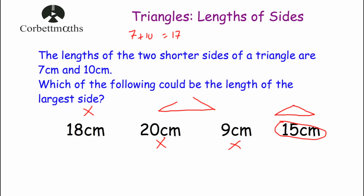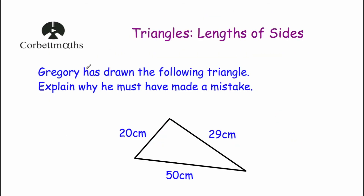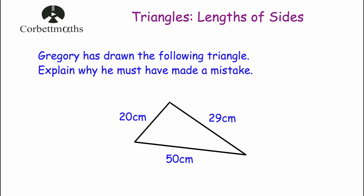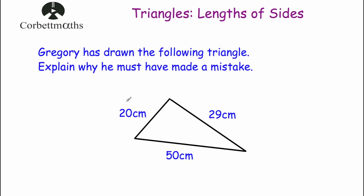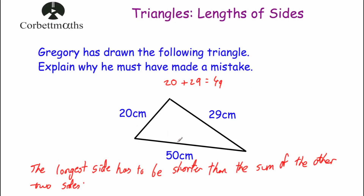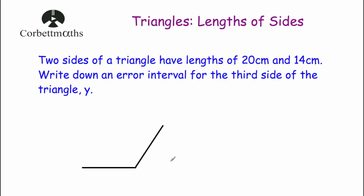The next question says: Gregory has drawn a triangle with sides 20cm, 29cm and 50cm. Explain why he must have made a mistake. Looking at the longest side: 20 + 29 = 49cm, so the longest side must be less than 49cm. Since 50cm is greater than 49, this side is too long. If you had a 50cm line and a 20cm and 29cm line, they simply wouldn't reach each other — they'd just be slightly short.